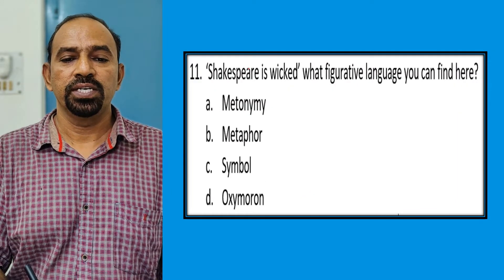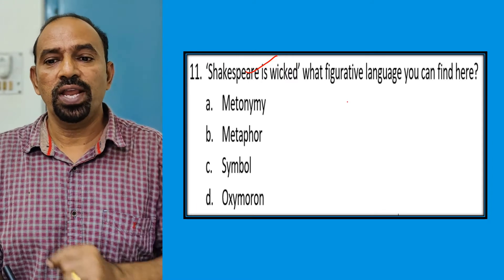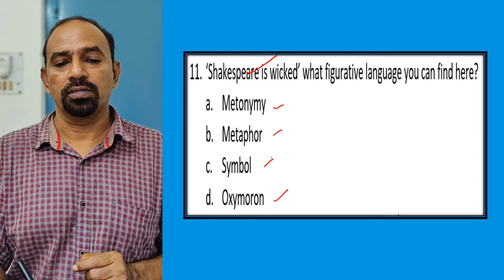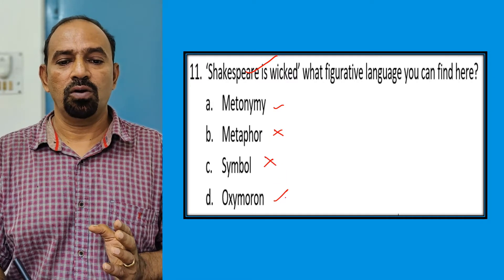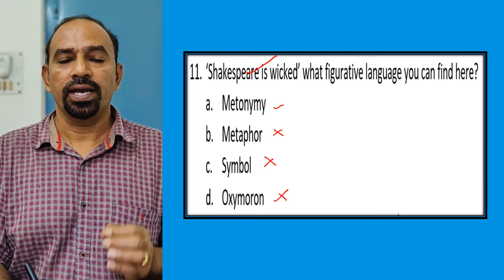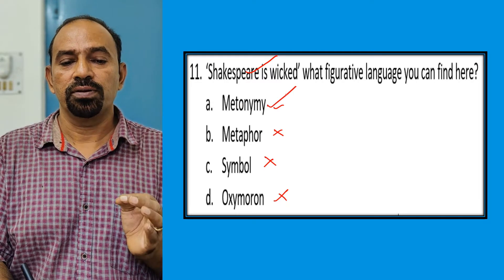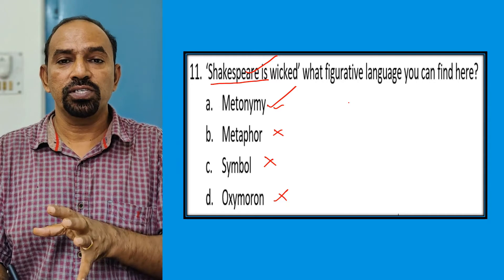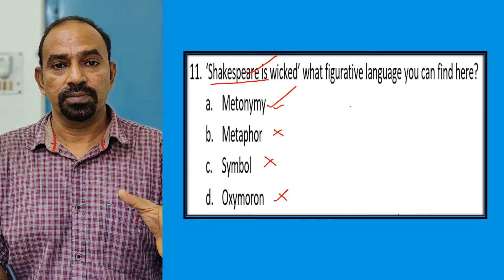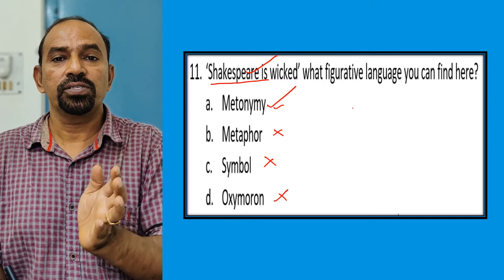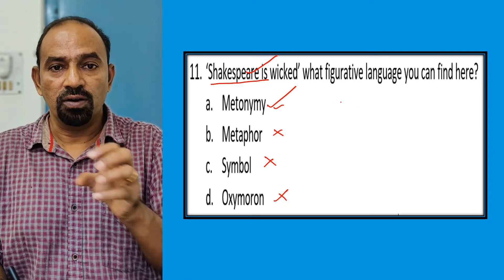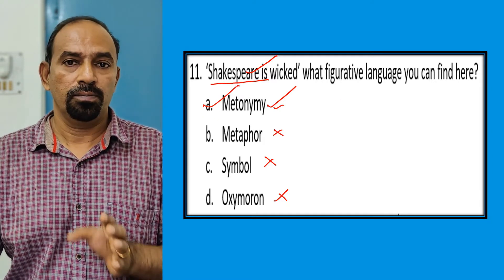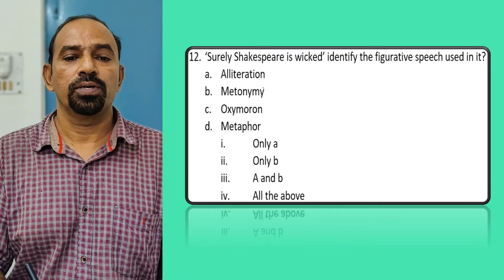Question eleven: What figurative language is used in 'Shakespeare is wicked'? Options are metonymy, metaphor, symbol, and oxymoron. It is not metaphor, symbol, or oxymoron. It is clearly metonymy, because the name Shakespeare is used to represent his romantic world. One name is used to represent another — that is metonymy.